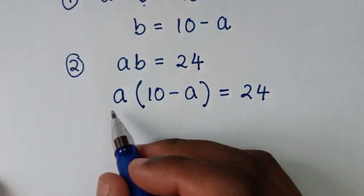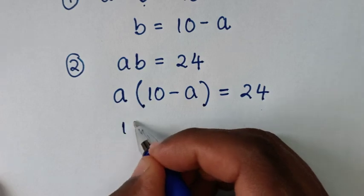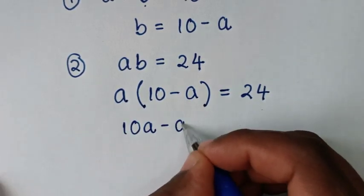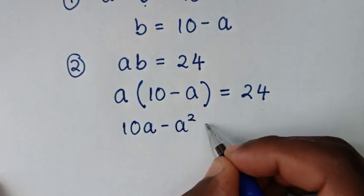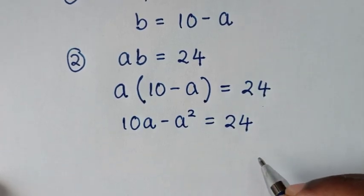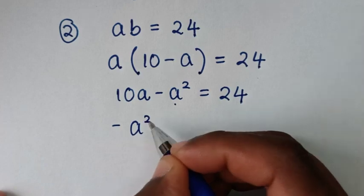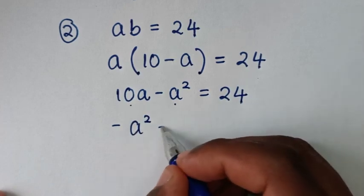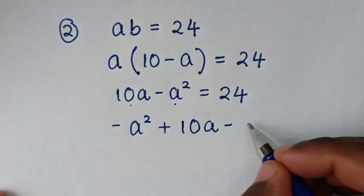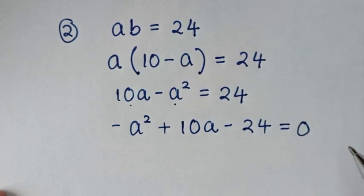Then we'll expand by taking a inside the bracket. So a times 10 is 10a, and a times negative a is negative a squared, is equal to 24. Then rearranging, we'll have negative a squared plus 10a, and taking 24 to this side it will be minus 24, is equal to 0.